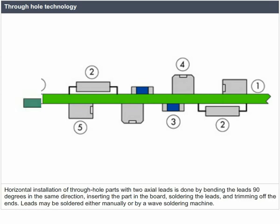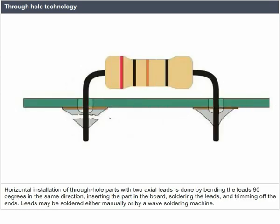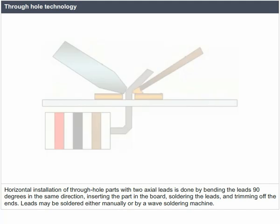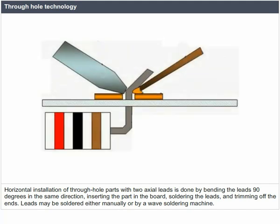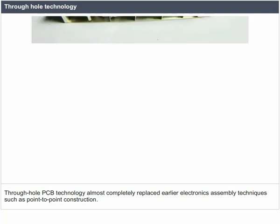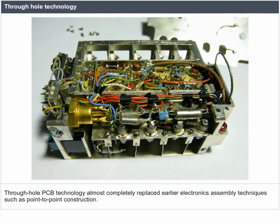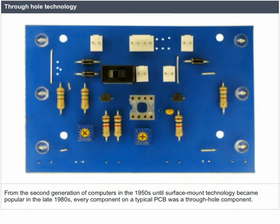Horizontal installation of through-hole parts with two axial leads is done by bending the leads 90 degrees in the same direction, inserting the part on the board, soldering the leads and trimming off the ends. Leads may be soldered manually or by a wave soldering machine. Through-hole PCB technology almost completely replaced earlier electronics assembly techniques from the second generation of computers in the 1950s until surface mount technology became popular in the late 1980s.